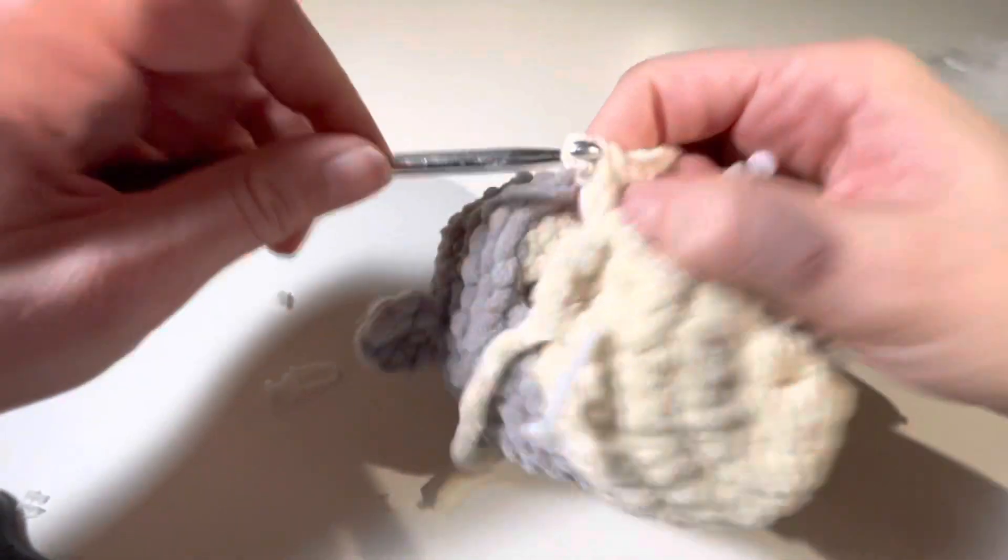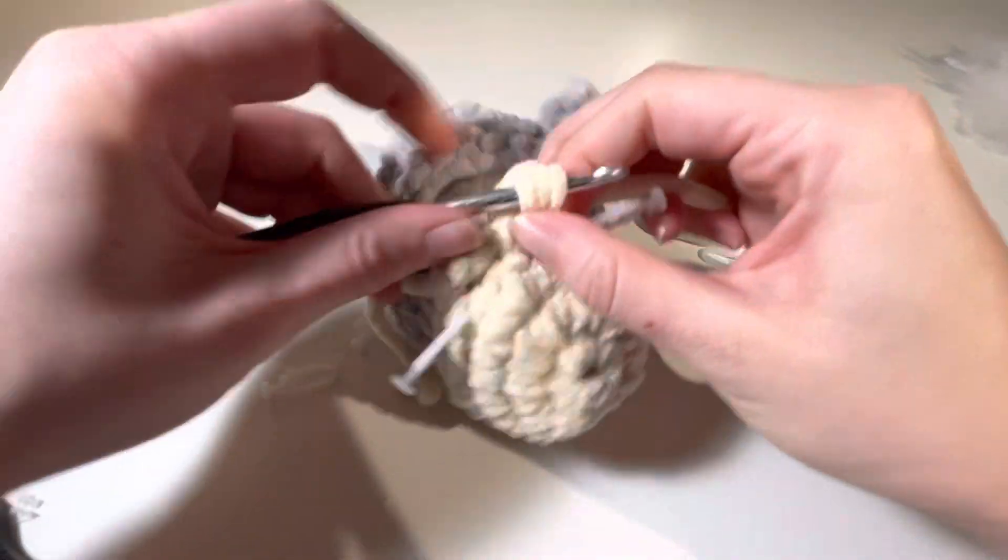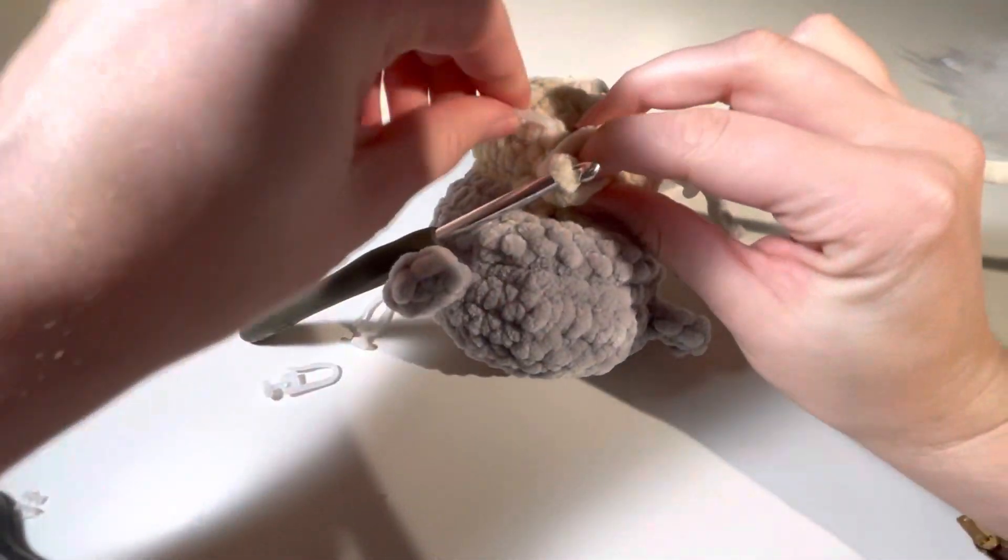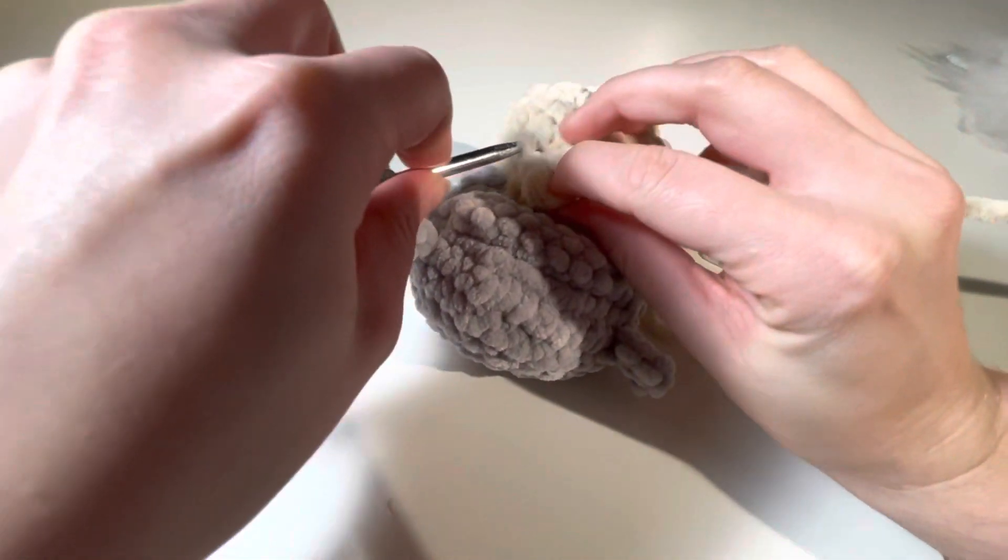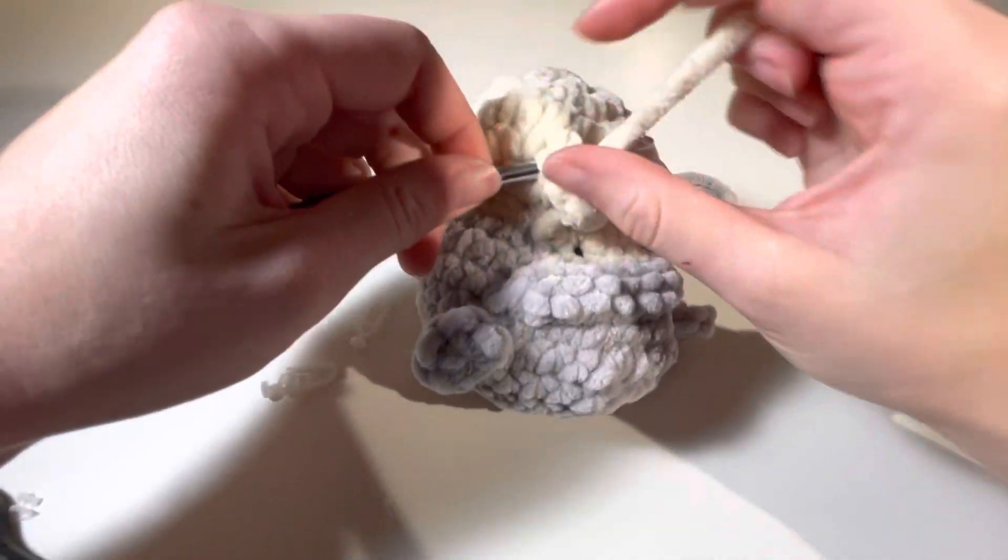Two, and three. And then again, turn the head around, undo this marker and go in from that side, so inwards towards the nostril, and slip stitch through all of them.